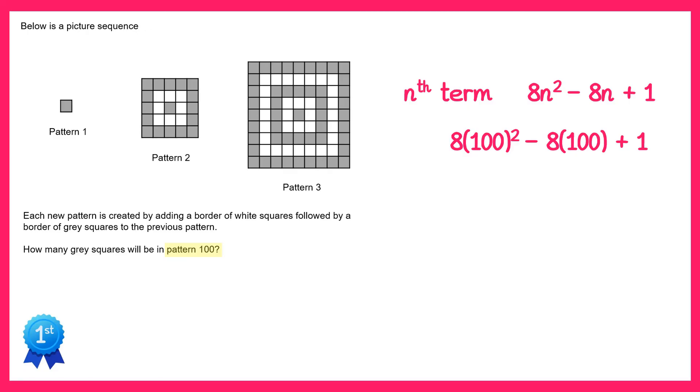100 squared is 10,000 so times that by 8, that's 80,000. 8 times 100 is 800, and then plus 1, and if you do this you'll get 79,201, which is the answer to the question.